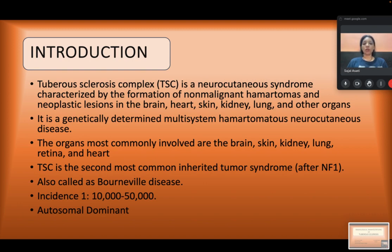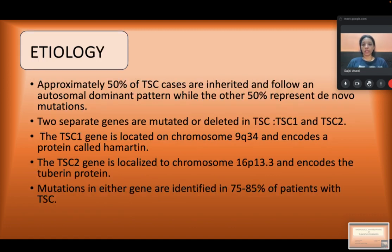The organs most commonly involved are the brain, skin, kidney, lung, retina, and heart. It is the second most common inherited tumor syndrome after NF1, also called Bourneville's disease. The incidence is 1 in 10,000 to 50,000. It is an autosomal dominant disease.